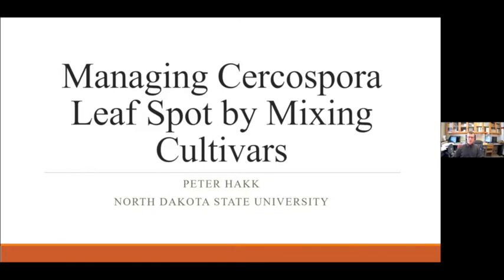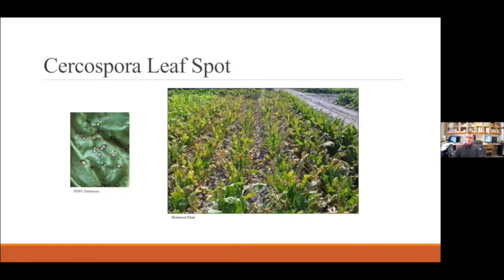I want to talk about a trial we've done for a few years now looking at controlling Cercospora leaf spot in sugar beets. Cercospora leaf spot is an extremely damaging disease and is the most destructive foliar disease on sugar beets in both North Dakota and Minnesota. It's a major problem in all growing districts but especially further south. It's a fungal disease that infects the leaves of sugar beets, typically starting when the rows close around the first of July, give or take a week or two.